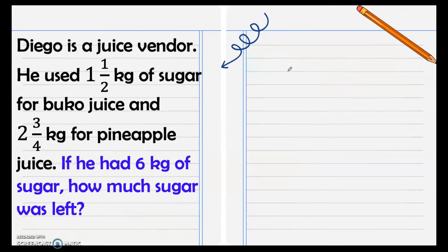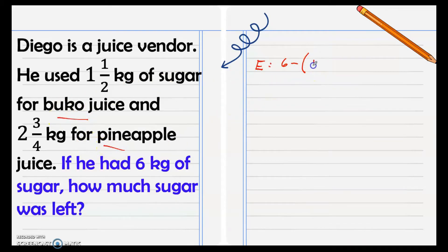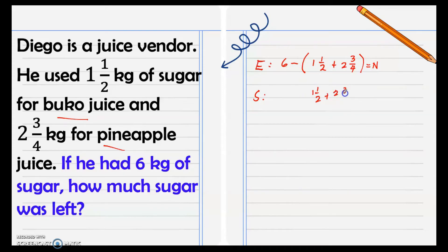Next example: Diego is a juice vendor. He used one and one-half kilograms of sugar for buko juice and two and three-fourth kilograms for pineapple juice. If he had six kilograms of sugar, how much sugar was left? This problem requires two operations. We write six minus the total kilograms used. We add first: one and one-half plus two and three-fourth, inside parentheses, before subtracting from six. Following the rule, perform what's inside the parenthesis first.